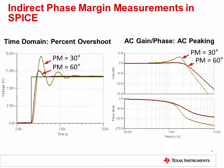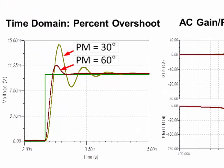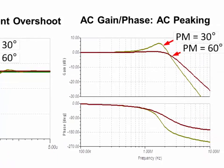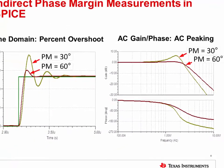As shown in these SPICE simulations, the magnitude of the percent overshoot and AC gain peaking directly correlate to the phase margin of the circuit. Circuits with lower phase margin exhibit a classic underdamped output response with significant percent overshoots relative to the input step size. Low phase margins also result in noticeable AC peaking when measuring the closed loop AC gain and phase characteristics of the circuit.